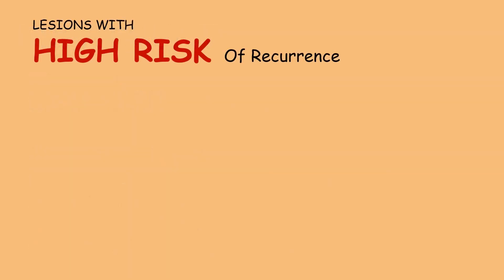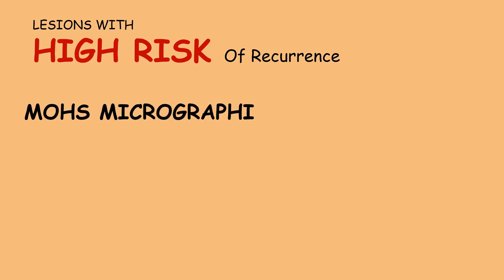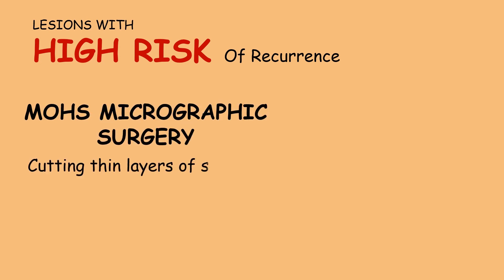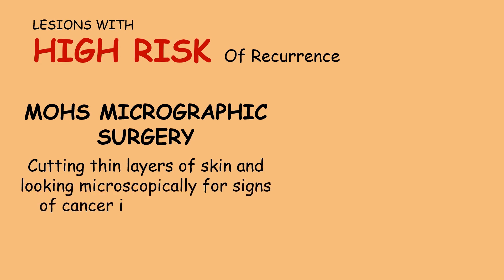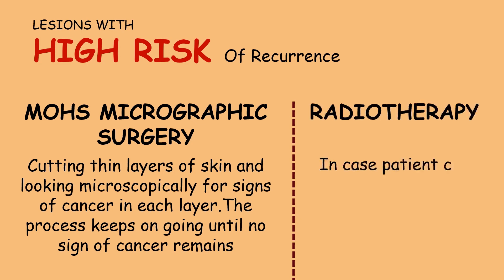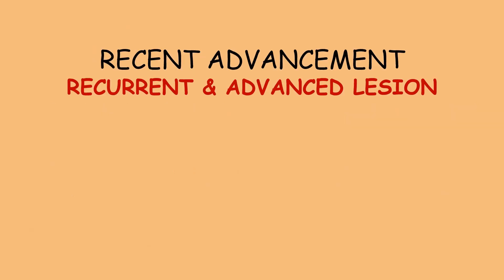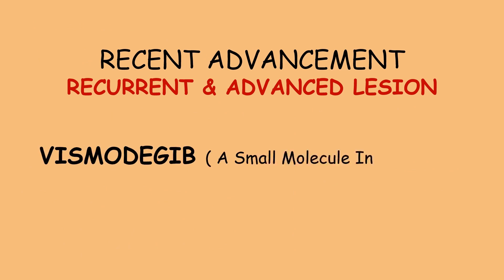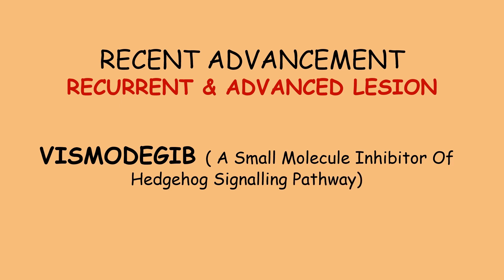For a lesion with high risk of recurrence, Mohs micrographic surgery is the treatment of choice. It involves cutting away thin layers of skin and looking microscopically for signs of cancer in each layer; the surgeon maps and marks the exact site of tissue removal. The process continues until no sign of cancer remains. Radiotherapy may be advocated only if the patient cannot tolerate surgery. A recent advancement for recurrent and advanced lesions is a drug called vismodegib, which is a small molecule inhibitor of the hedgehog signaling pathway.